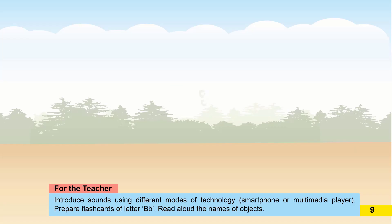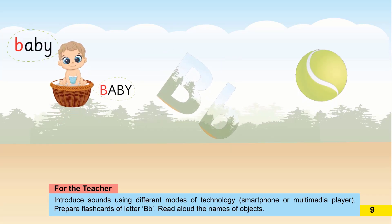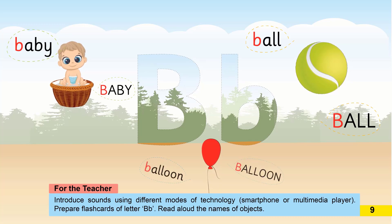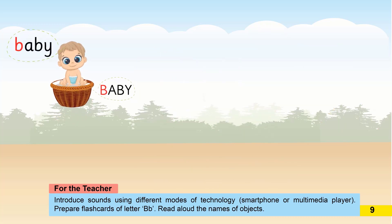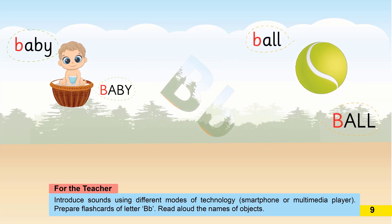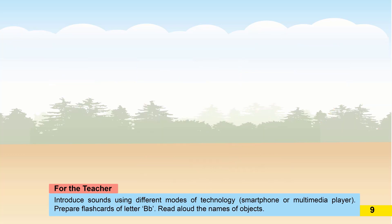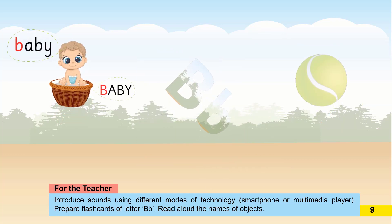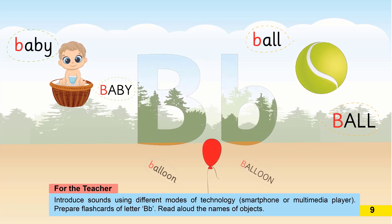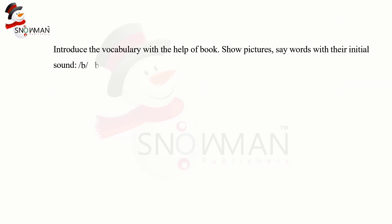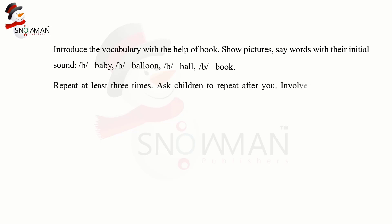Practice the words with their B sound: B-B baby, B-B ball, B-B balloon, B-B book. Repeat at least three times and ask the children to repeat after you. Involve the class in this process. Tell the children that B is a consonant.